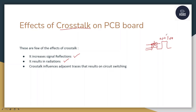The crosstalk influences adjacent traces and results in circuit switching — where it was supposed to be zero but it becomes one. These are the common effects seen in the case of crosstalk. Whenever you see these kinds of issues on your board, you need to do crosstalk analysis via board simulation, get results, and improve them.